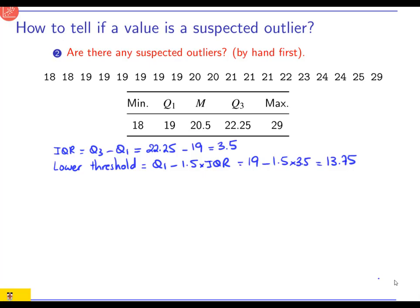So now the lower limit for outliers will be Q1 minus 1.5 times the interquartile range. So we calculate this. It's going to be 19 minus 1.5 times 3.5, and that is 13.75. Anything below 13.75 is a suspected outlier. So where is that? So 13.75 is somewhere here and there is nothing below.